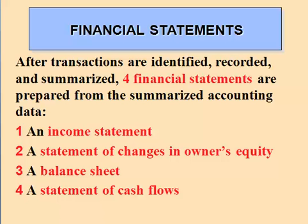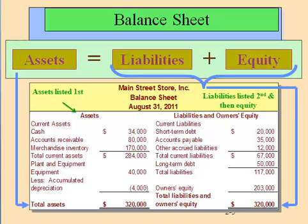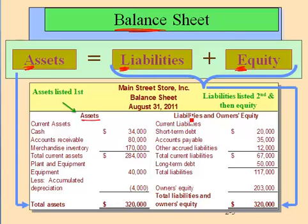The first one we're going to look at is the balance sheet. It mirrors the basic accounting equation: assets equal liabilities plus equity — what we own equals what we owe plus the difference between what we own and what we owe. That spells ALE — I like to tell my students, if you drink too much ale, you get out of balance. The balance sheet can be shown side by side, mirroring the equation, or top to bottom with assets on top and liabilities and equity on the bottom.